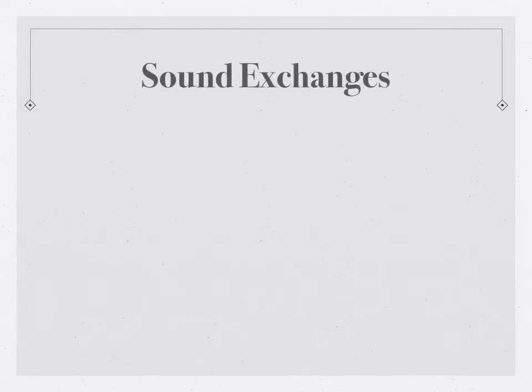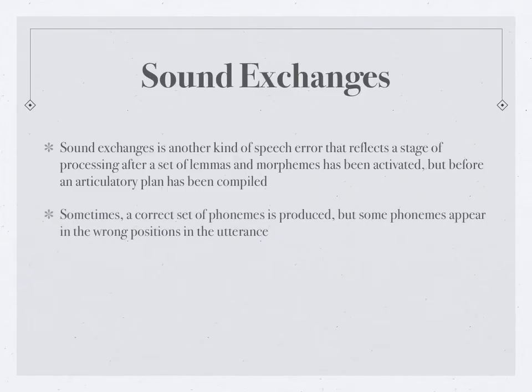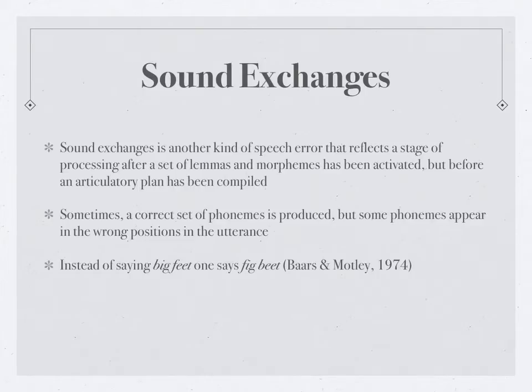The next kind of speech error is referred to as sound exchanges. Sound exchanges reflect a stage of processing after a set of lemmas and morphemes has been activated but before an articulatory plan has been compiled. Sometimes a correct set of phonemes is produced but some phonemes appear in the wrong positions. For example, instead of saying 'big feet,' one says 'fig beat' (Motley & Baars, 1974). Sound exchanges almost always respect the positional constraint — here is one example of how speech errors are organized and respect rules and constraints.